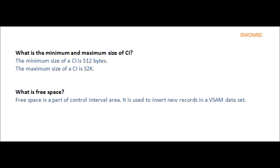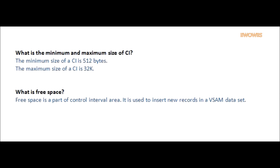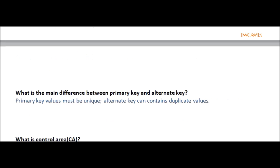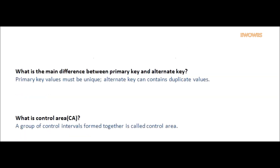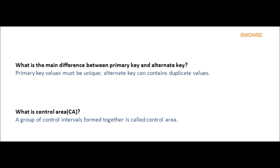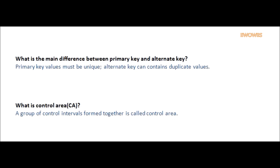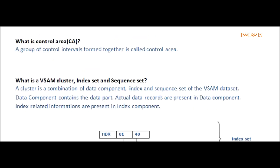Question: What is Free Space? Answer: Free Space is a part of the Control Interval area. It is used to insert new records in a VSAM dataset. Question: What is the main difference between Primary Key and Alternate Key? Primary Key values must be unique; Alternate Key can contain duplicate values.